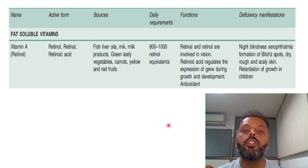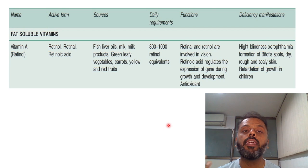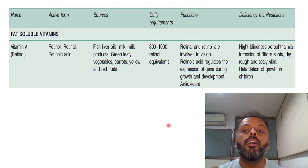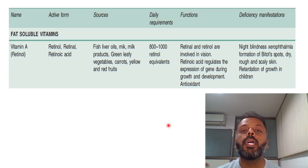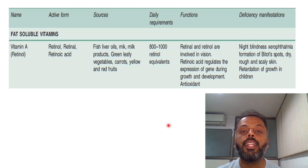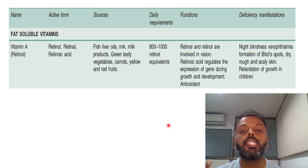Now, what are the sources of vitamin A? Vitamin A sources include fish liver oil, milk and milk-derived products, green leafy vegetables, and yellow and red fruits like mangoes, papayas, and carrots.